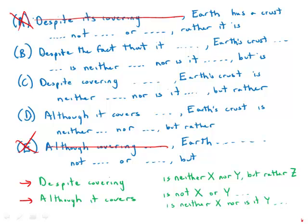Although is a subordinate conjunction. Needs to be followed by an entire clause. That is to say it needs to be followed by a noun and a verb. So although it covers, perfectly correct. Although covering, which is what we have in E, that would be incorrect. We can't follow a subordinate conjunction with simply a noun or a gerund. We need a full subject verb construction.